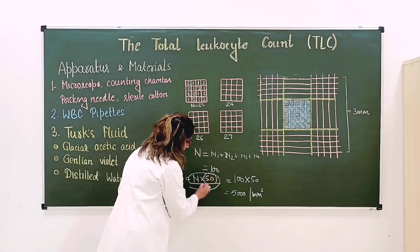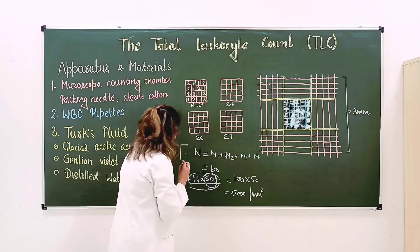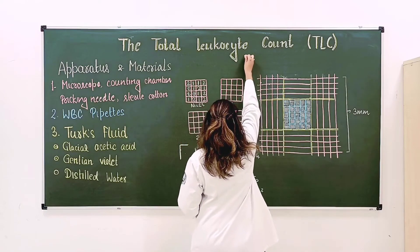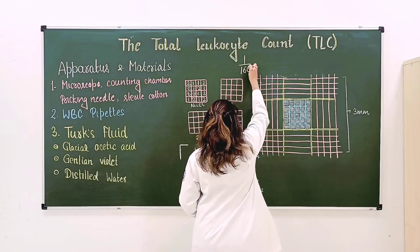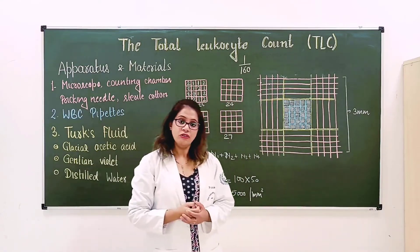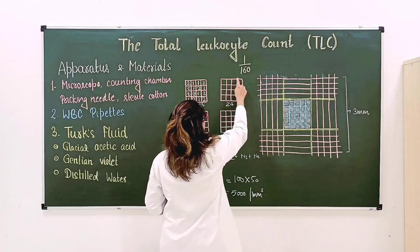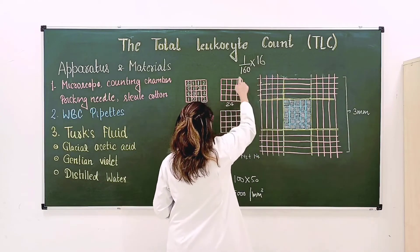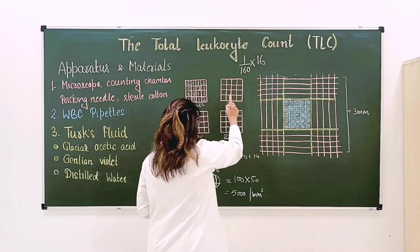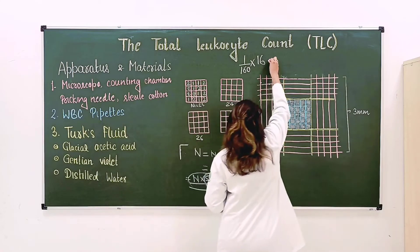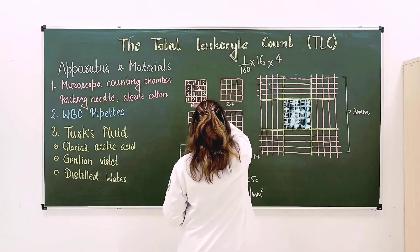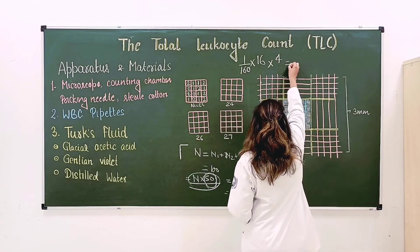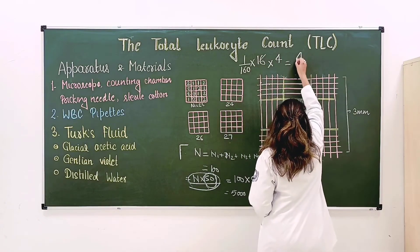Where does the 50 come from? The volume of one medium-size square is 1/160 mm³, as described in the Neubauer chamber video. There are 16 medium squares in one large square, and we count 4 large squares. So the total volume counted is 4/10 mm³.